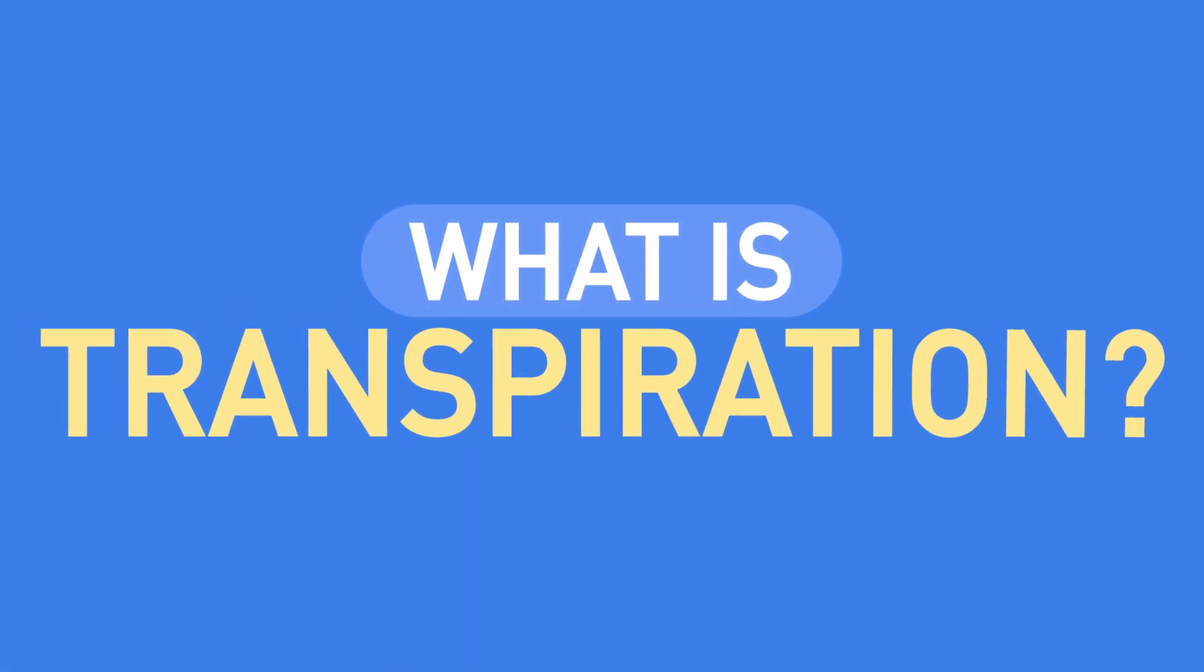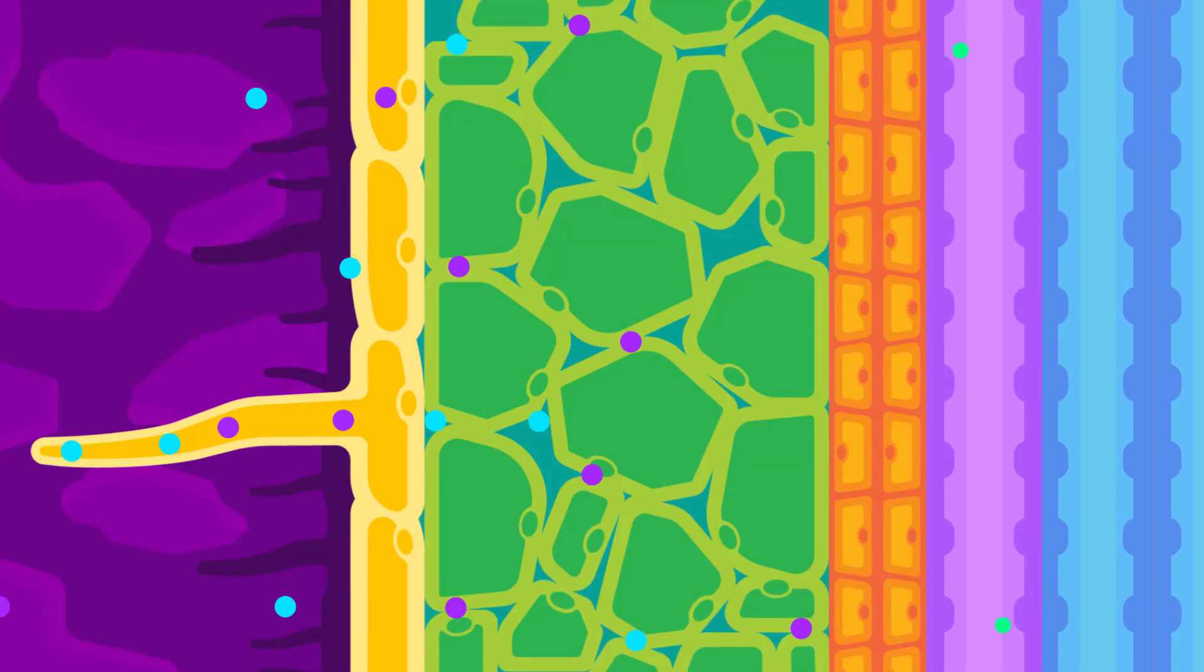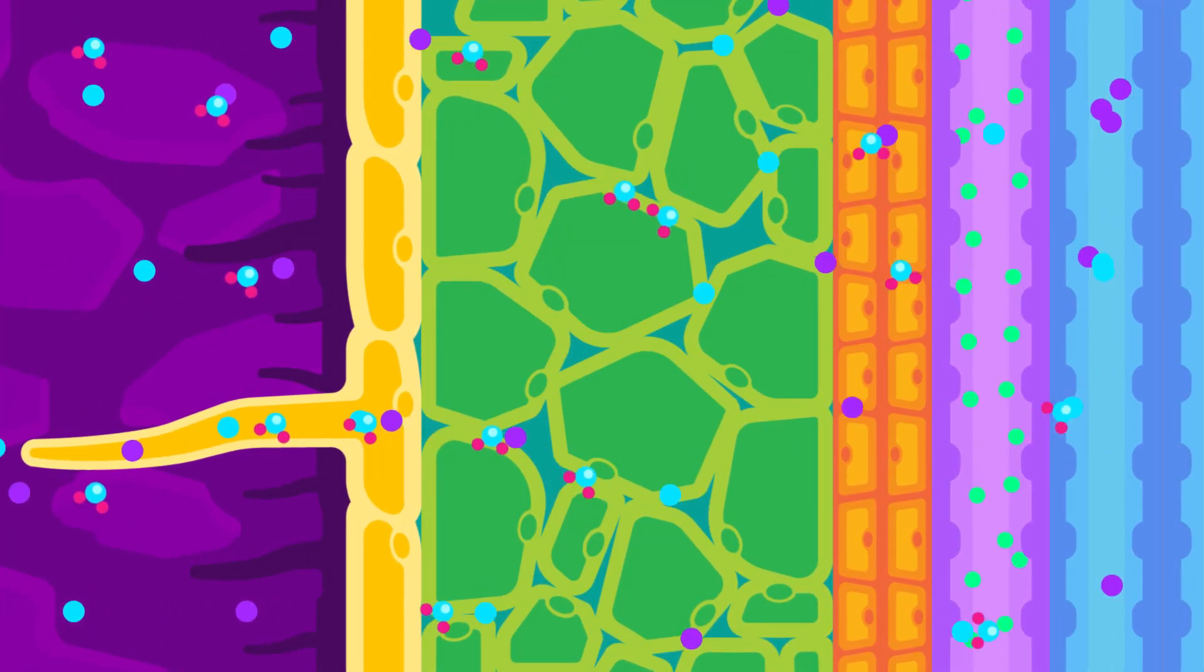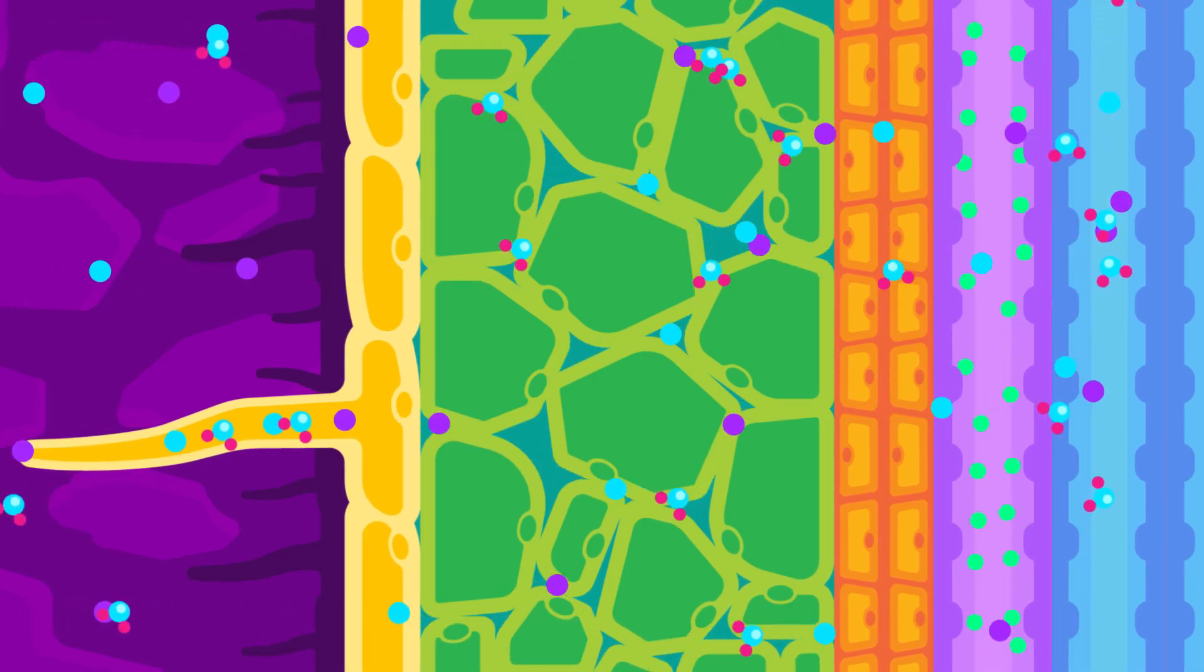What is transpiration? We just studied that the transportation of food in plants occurs in phloem, and its water occurs in xylem. Now, we will discuss transpiration and the factors affecting it.